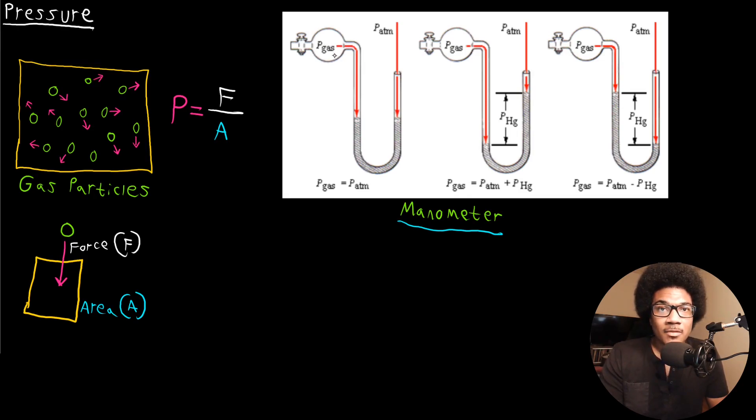And obviously that gas is going to have some pressure that it exerts. The other side of the manometer is actually open to the atmosphere. So the other side of the manometer is at atmospheric pressure, whatever the pressure is of your room or where you're doing the experiment. So this first one that you see is the example of if the pressure of the gas is equal to the pressure of the atmosphere. This liquid that's in the manometer is usually mercury. And if the pressures are both the same, then the heights of the mercury on both sides of the manometer will be exactly the same because it's experiencing the exact same pressure on both sides.